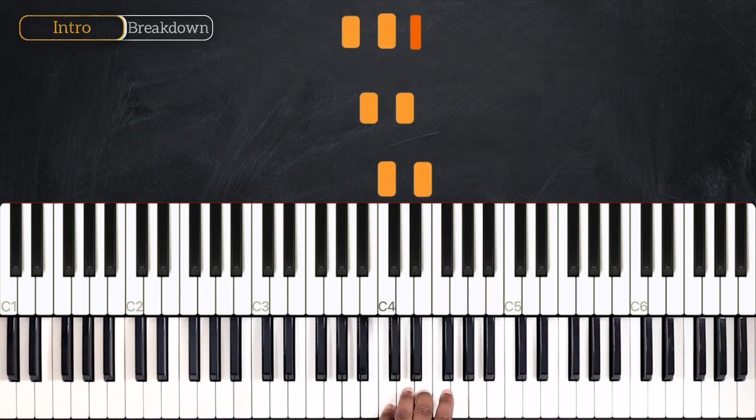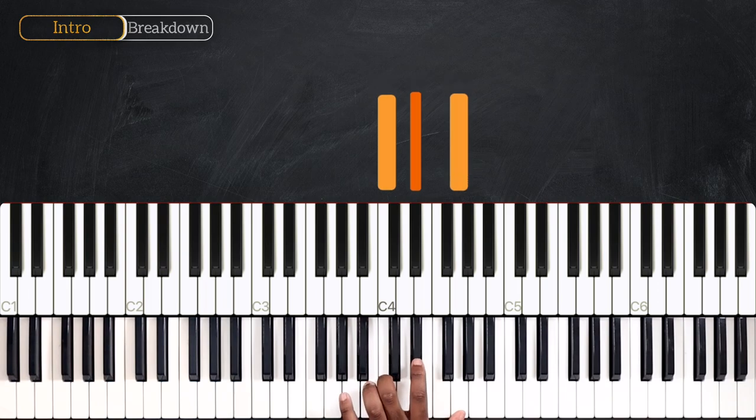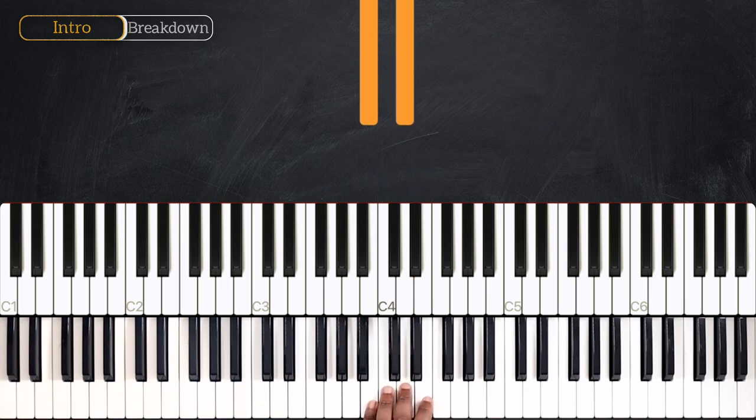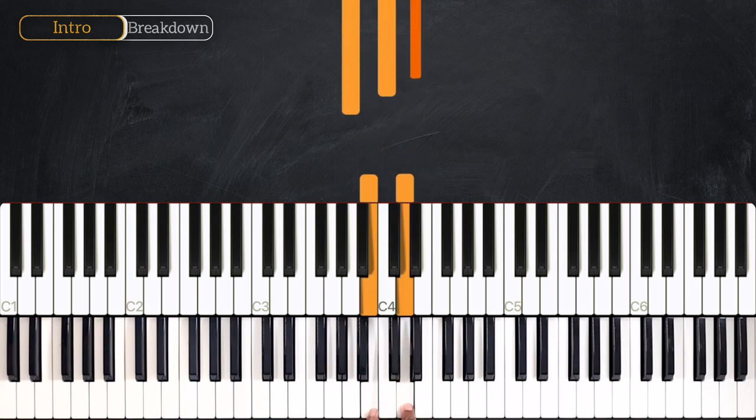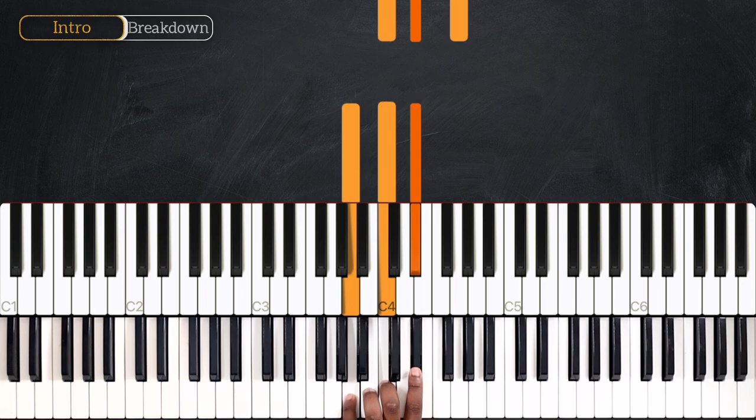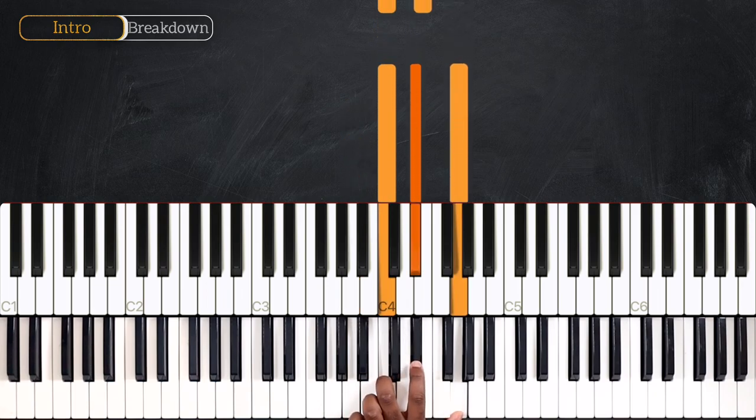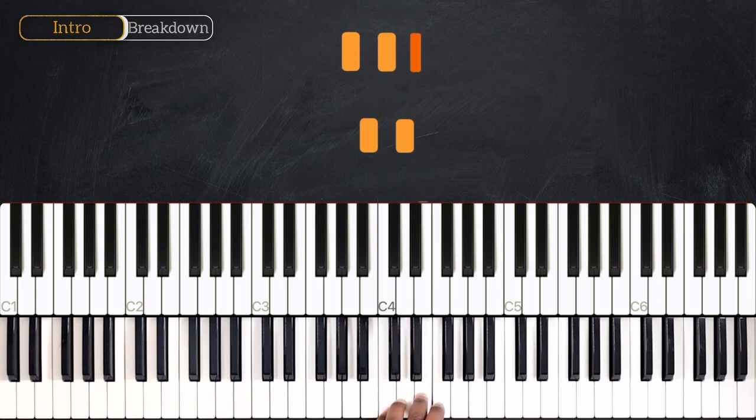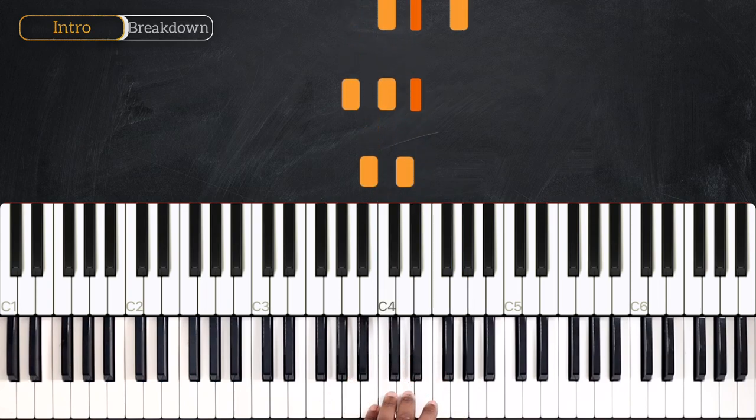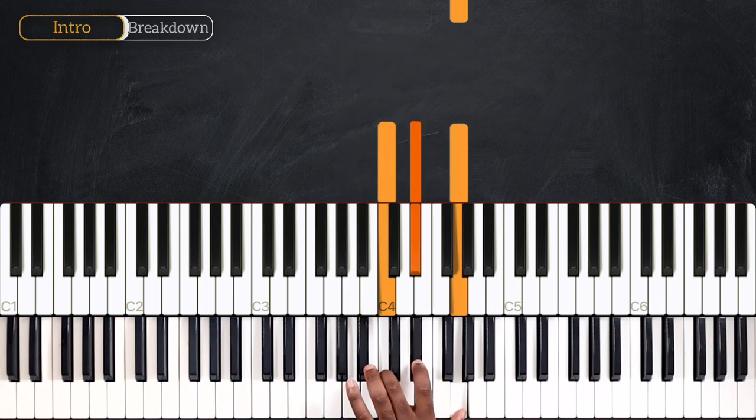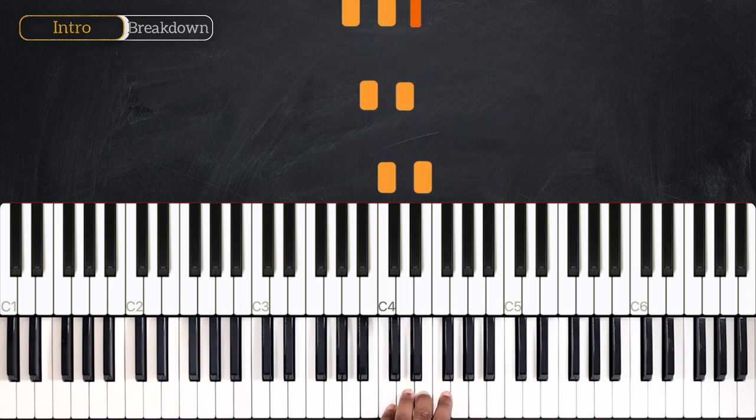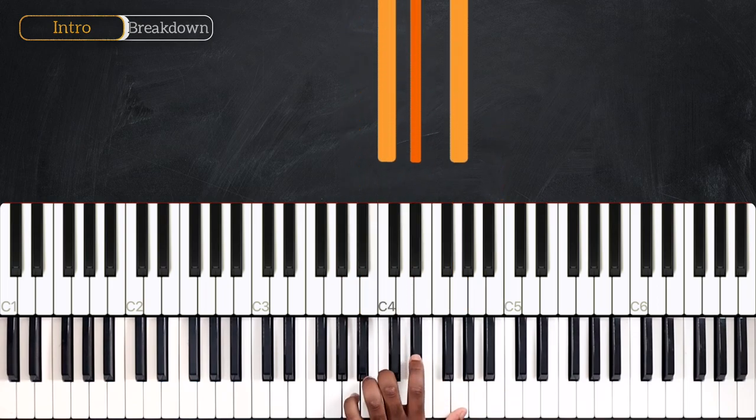And then coming after that, I played C and E going down on B and D. And then I played A diminished, so A, C, and D sharp, going up on C minor - C, D sharp, and G.